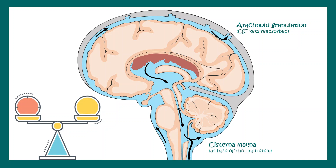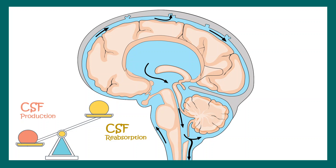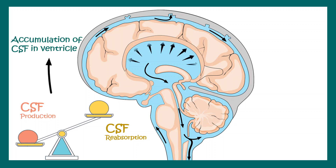This balance is disrupted in hydrocephalus. Either there is enhanced CSF production or there is reduced reabsorption of CSF. Both of these can lead to accumulation of CSF in the ventricles, building up massive pressure that is damaging to the brain.